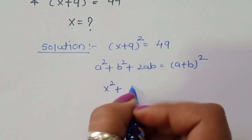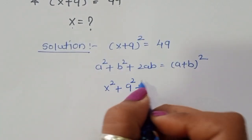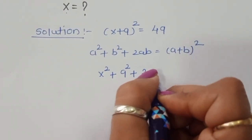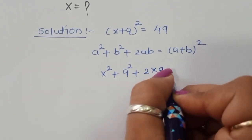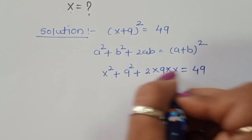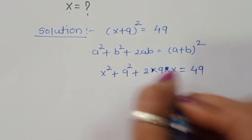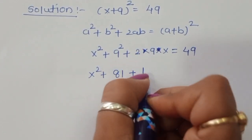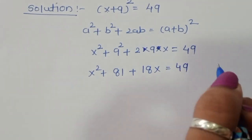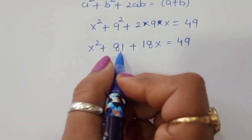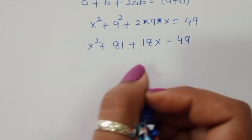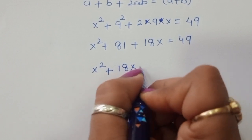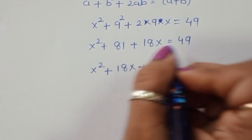...plus b square, which is 9 square, plus 2ab, which is 2 times x times 9 = 18x, is equal to 49. So we get x square plus 81 plus 18x is equal to 49.